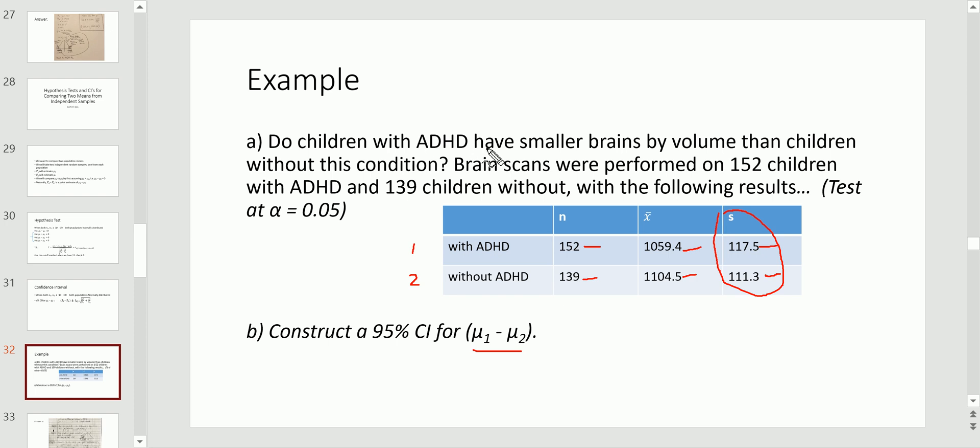Now, let's just go back to that question. Do children with ADHD have smaller brain volumes than children without? So, since I called with ADHD group 1, we're saying, is the mean brain volume of this group smaller than this group? So, this is the alternative hypothesis that we need to work with. Now, some texts will write it like this, but just so you know, this is going to be equivalent to saying this.